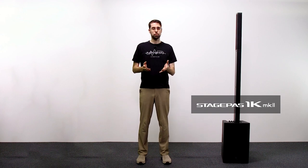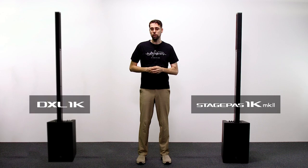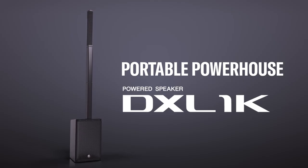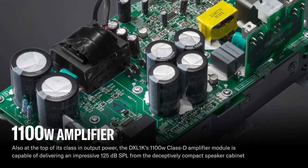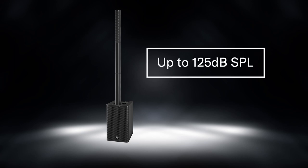So for that, we created the DXL-1K. The DXL-1K shares the same output specs as the StagePass 1K Mark II with improved power distribution between the line array speaker and subwoofer to create 1100 watts of power and 125 dB of sound pressure.